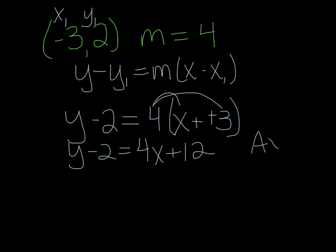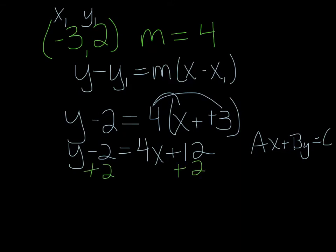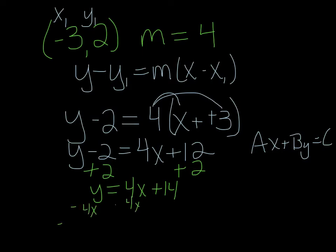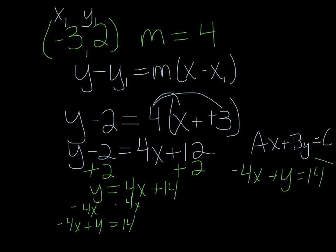Now we want this in standard form. My y is good. This 2, I don't want here — I want it over with the 12. And my 4x, I want in front of my y. So I'm going to move the 2 under the 12, because that's what I can combine. So I have y equals 4x plus 14. Now I need to move the 4x over here — when you move it, it changes signs. So I have negative 4x plus y equals 14. That's in standard form.